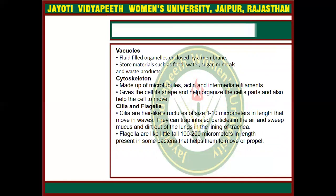Vacuoles are fluid-filled organelles enclosed by a membrane. They have storage capability and store food that has been synthesized, so that plants can use the stored material. Vacuoles are present in animal cells but are smaller in size, while vacuoles in plant cells are larger. The next organelle is the cytoskeleton, which is made up of microtubules, actin, and intermediate filaments. It provides cell shape, helps organize cell parts, and helps cells move.